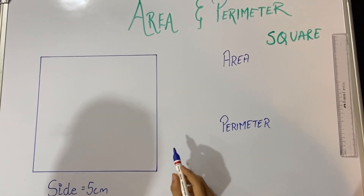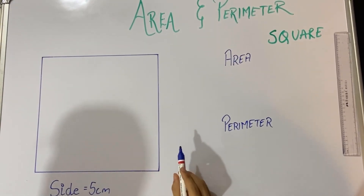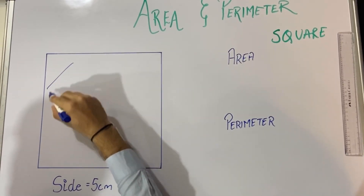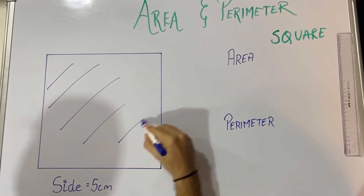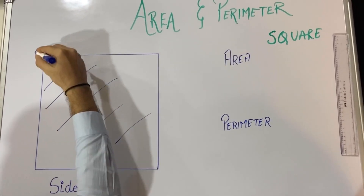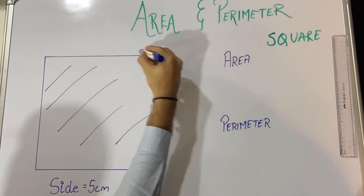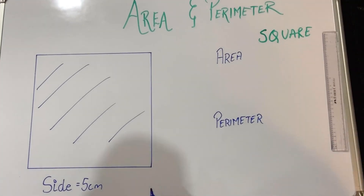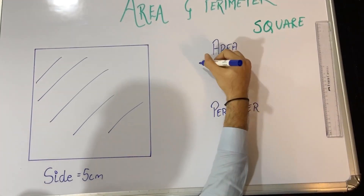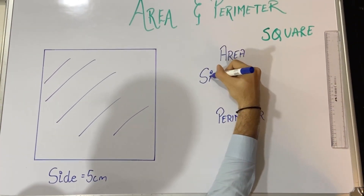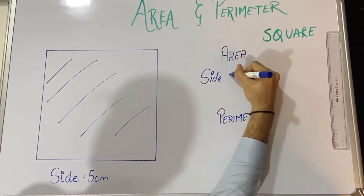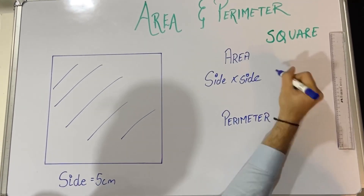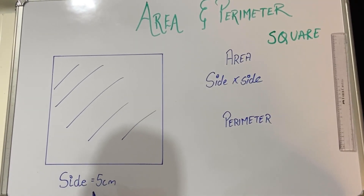This is a square. First we will know what is the meaning of area and perimeter. Area is the inner portion and perimeter is the outer portion of the square. The formula of area is side into side, and we have taken side as 5 centimeter.